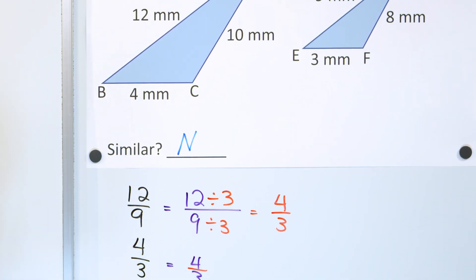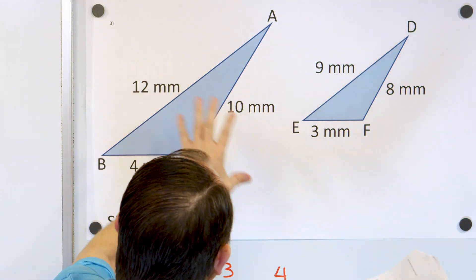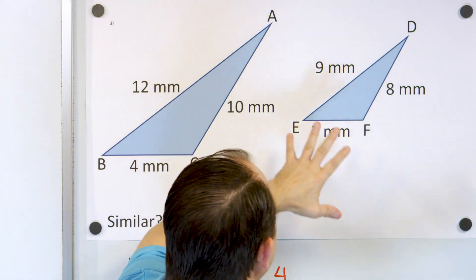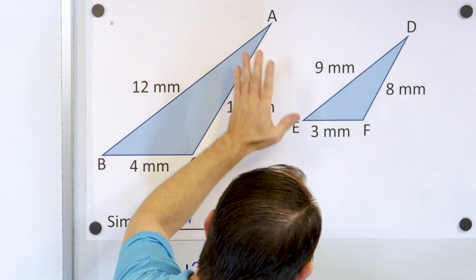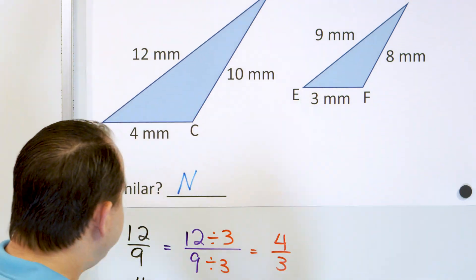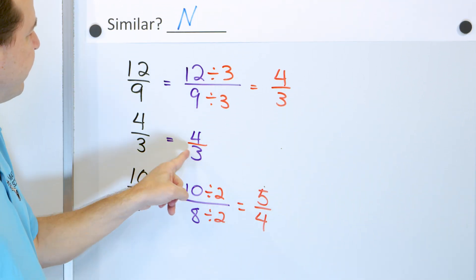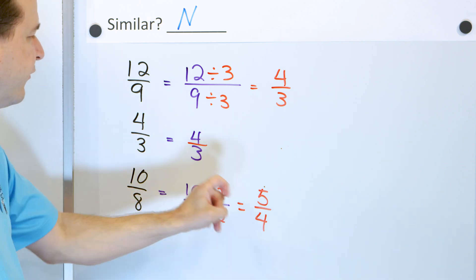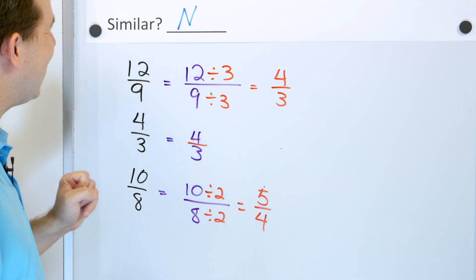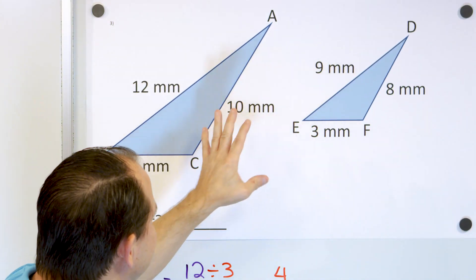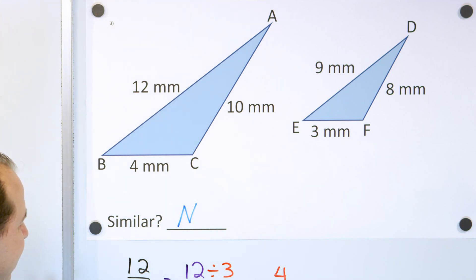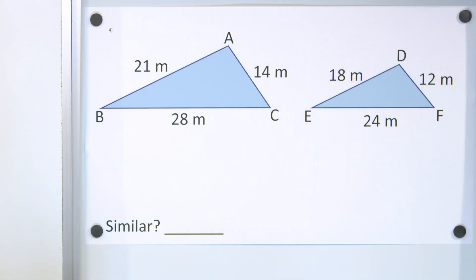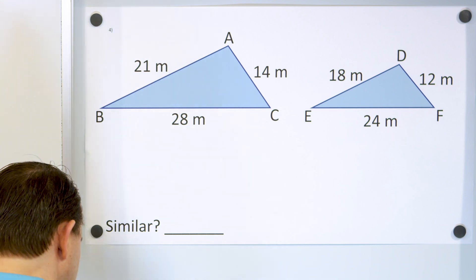When I look at these two triangles visually, they look similar to me because they're both slanted. But 5/4 is pretty close to 4/3 — it's just not quite the same. Even though the drawing looks similar, you can't trust yourself there. You have to trust the math.